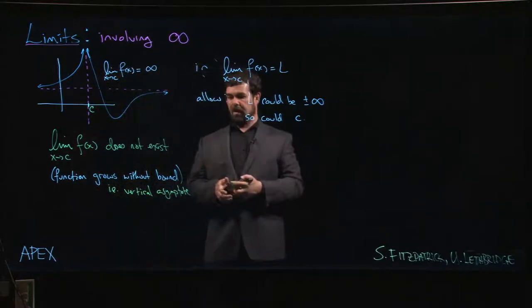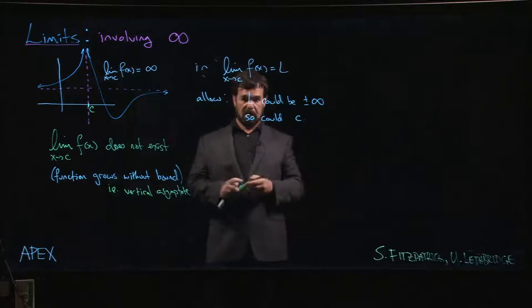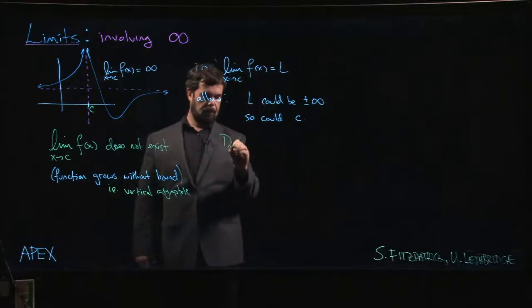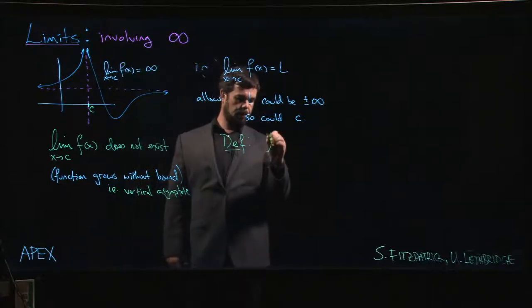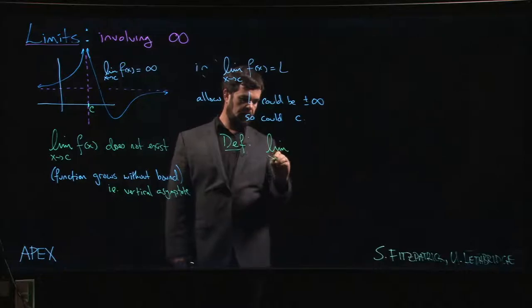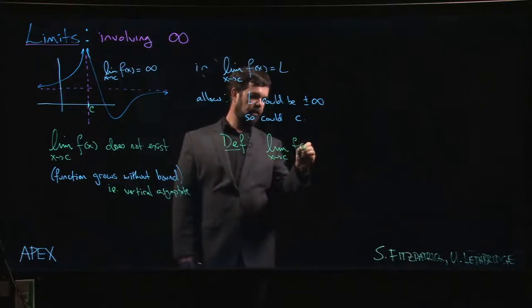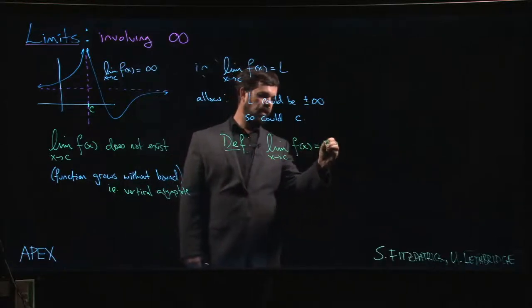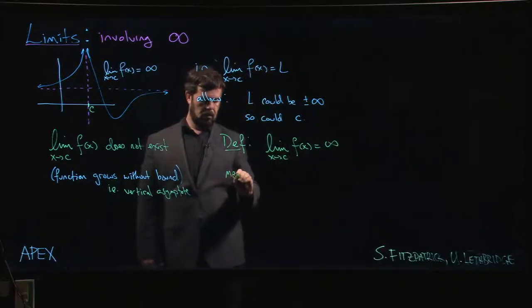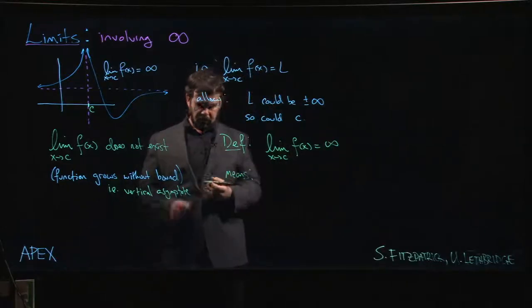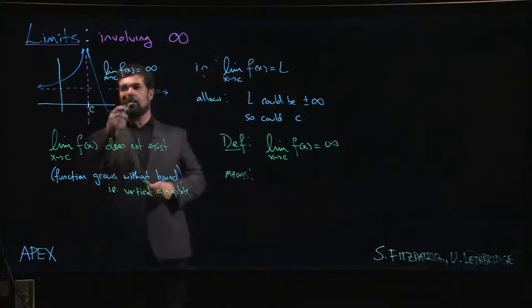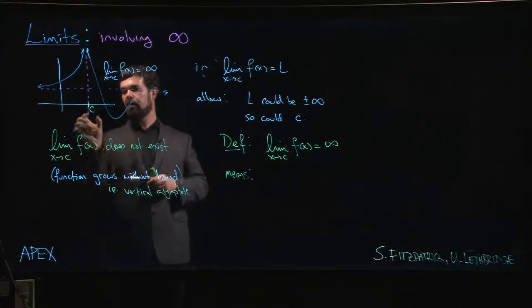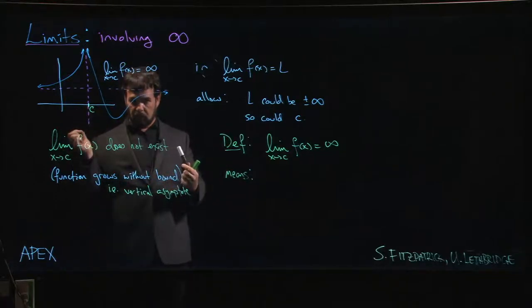For infinite limits, we can start with a quick definition here. When we say that the limit as x approaches c of f of x is infinity, what this means—now we have to think about how do we make this precise? What we want to say is that we can make the value of the function arbitrarily big by choosing an x value that's close enough to c. How do we quantify arbitrarily big?